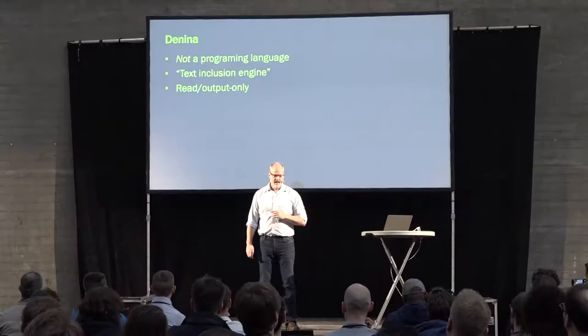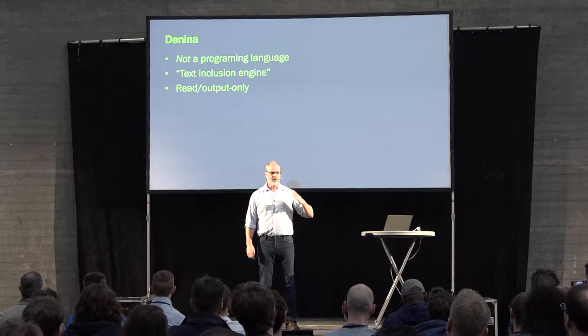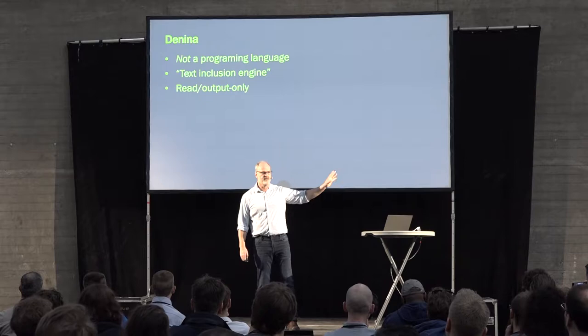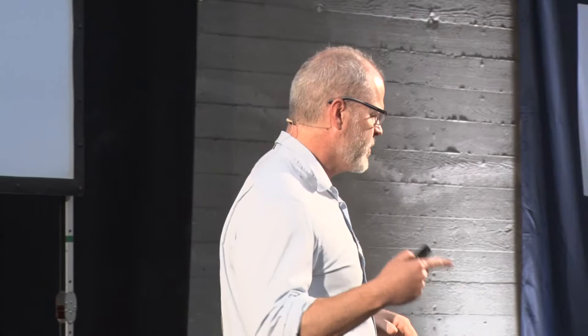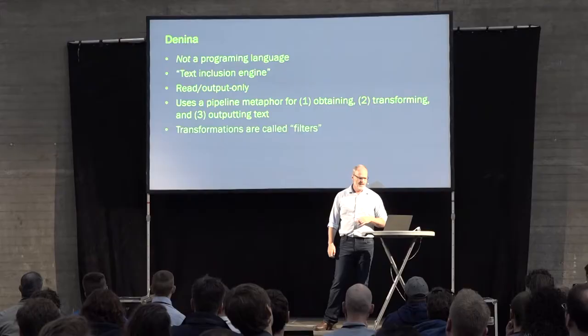It becomes an assembly line — you get text, you progressively refine it, and then push it out. Denina is the name of the scripting language I've built. It is not a programming language — not a Turing-complete language. You won't find loops or anything like that. It's really what I would call a text inclusion engine. It's read and output only, and it uses a pipeline metaphor for obtaining, transforming, and finally outputting text.